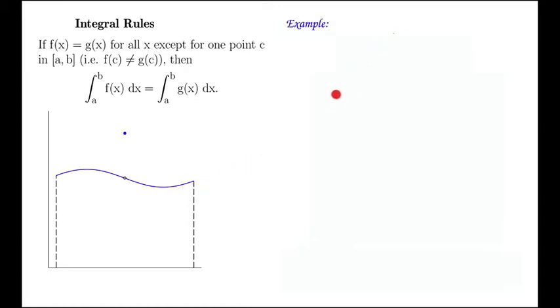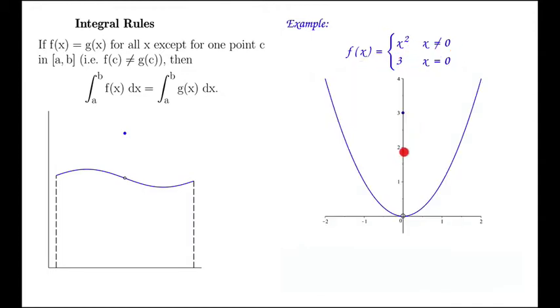So let's look at an example where we can use that. Suppose we wanted to integrate this function. It's x squared for x not equal to zero. It's three if x is equal to zero. So right here at zero, it has a different value, three.